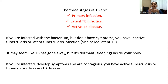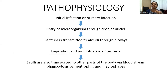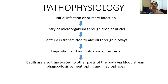If contagious, and we have the droplets, it is the active stage. Coming to the pathophysiology of tuberculosis — this is the initial primary infection. The entry of the microorganism occurs through droplet nuclei. The droplet is transmitted to the alveoli through the airways, and the bacteria are transmitted to the alveoli through the airways.